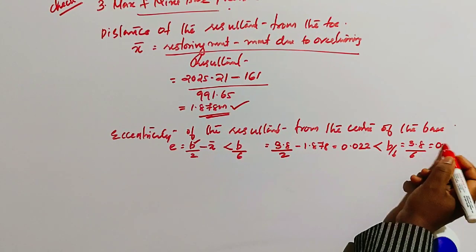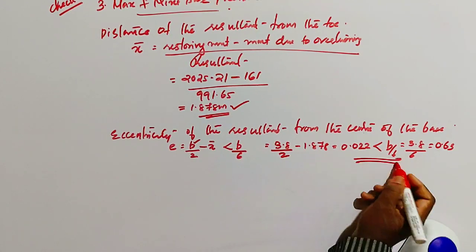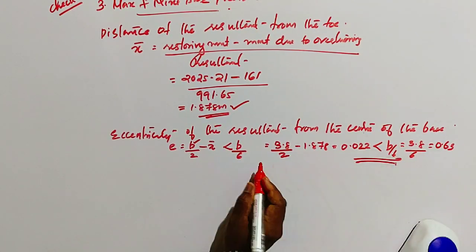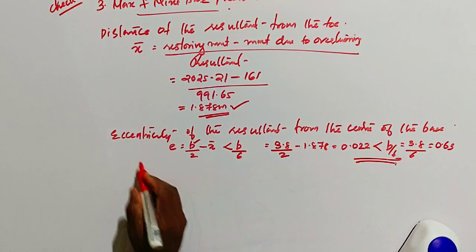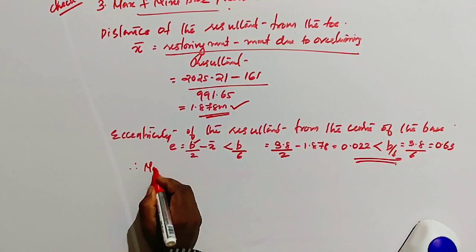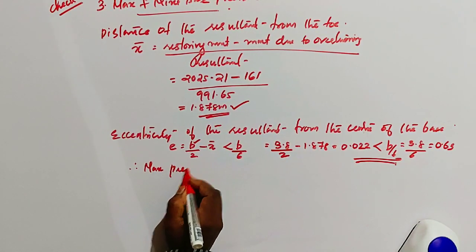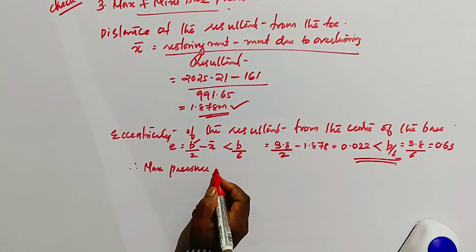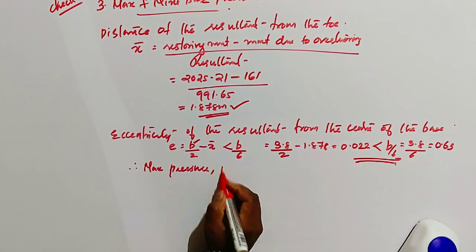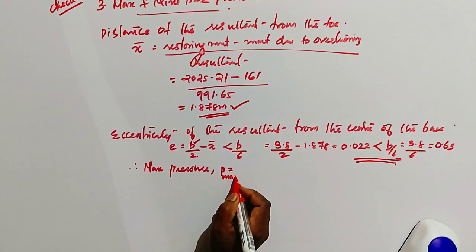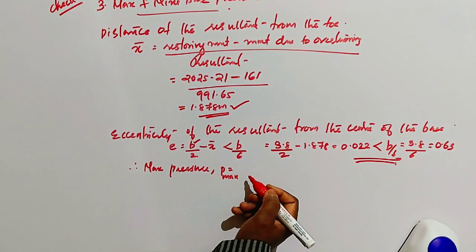It is less than B by 6, where B is 3.8 by 6, the answer is 0.63. Yes, 0.022 less than 0.63. If it is greater than B by 6, or the eccentricity is more than B by 6, tension would develop at the bottom, that means losing the contact with the founding media.